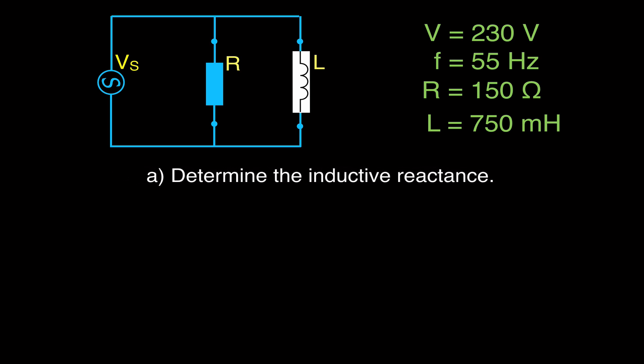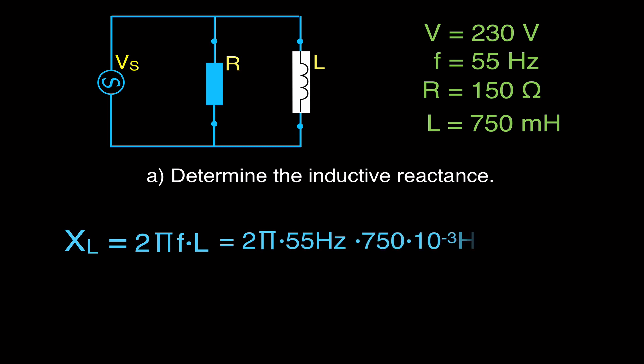Let's get started. We're going to calculate the inductive reactance of our inductor, which is a 750 millihenry coil. The inductive reactance X_L equals 2 times pi times frequency times the inductance of the inductor — that's 2 times pi times 55 hertz times 750 millihenries. You must convert from millihenries into henries, which is 750 times 10 to the minus 3, and you get that the inductive reactance of that coil is 259 ohms.